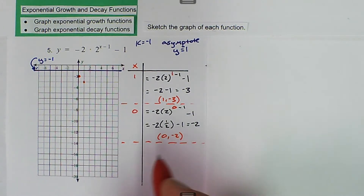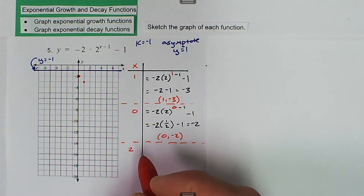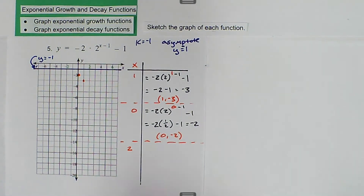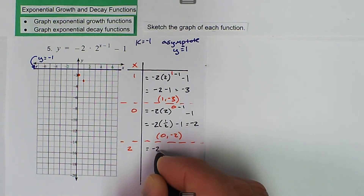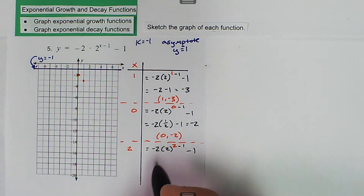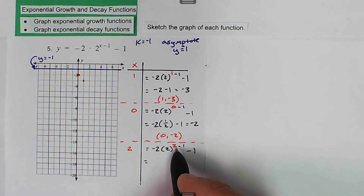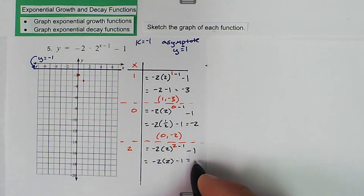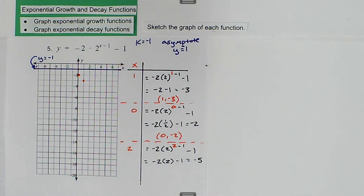So we're going to get one more point, and I'm going to pick x equals 2. So we substitute in negative 2 times 2 raised to the 2 minus 1, minus 1. So 2 minus 1 is 1, 2 to the first power is 2, so we get negative 2 times 2 minus 1. That's negative 4 minus 1, which is negative 5. So we get the ordered pair (2, -5).